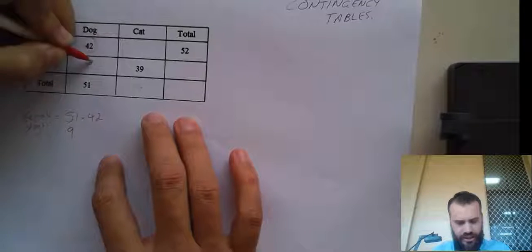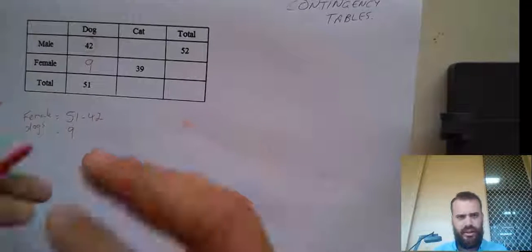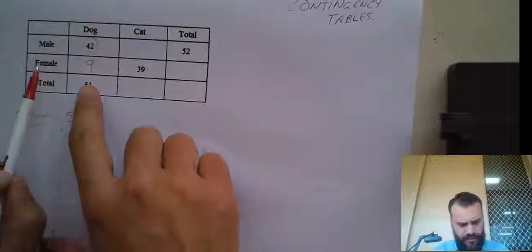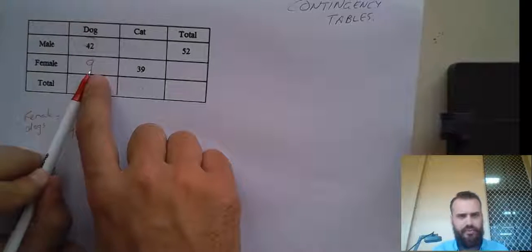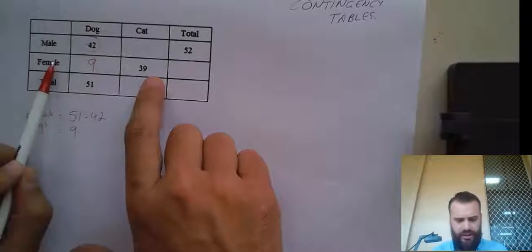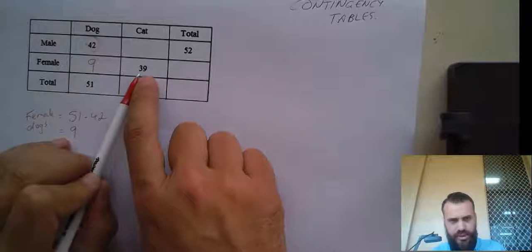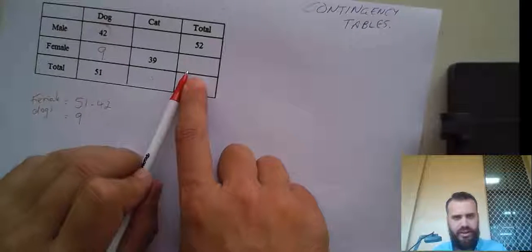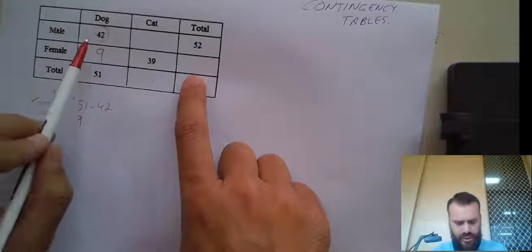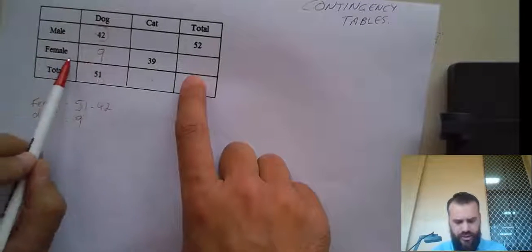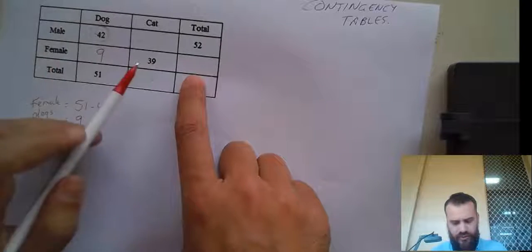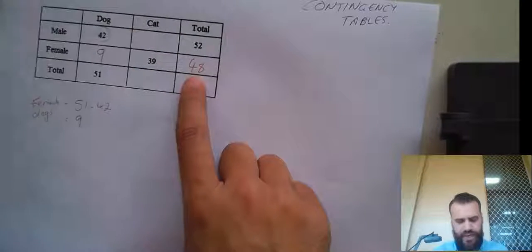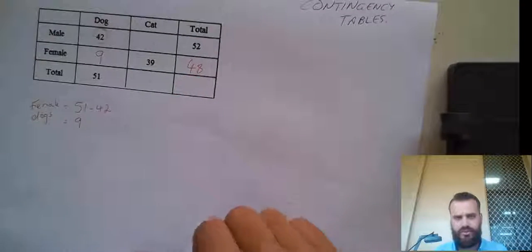So we can fill in the gap there: 9. Now, female dogs — there are 9 of them. Female cats — there are 39 of them. So how many females are there in total? 9 dogs plus 39 cats, so there are 48 female animals in total.